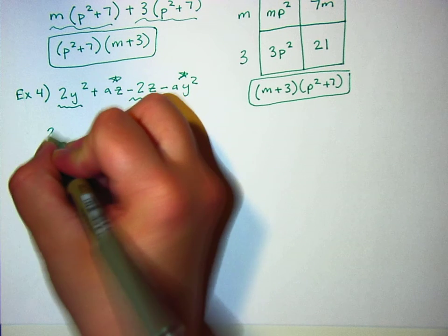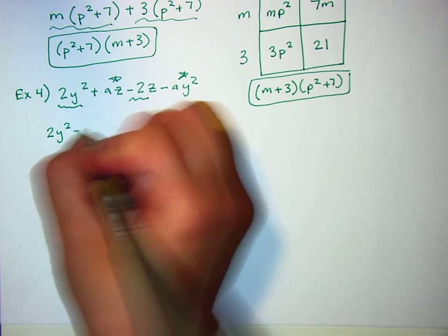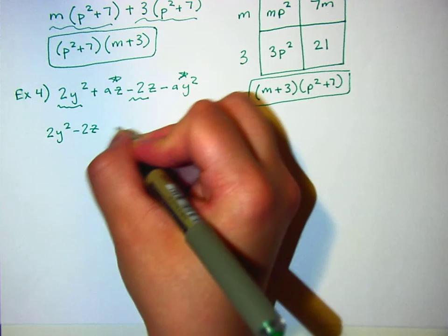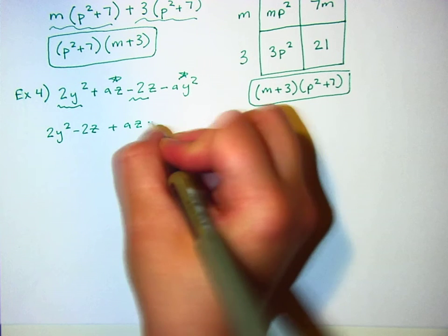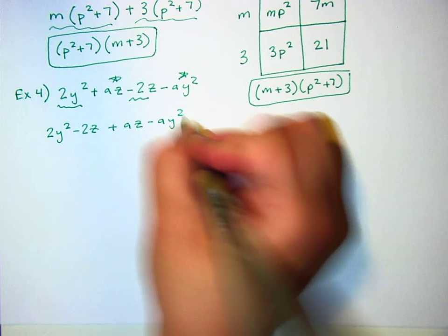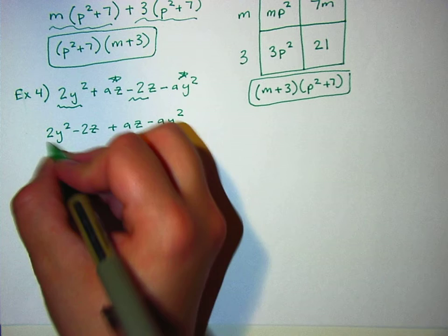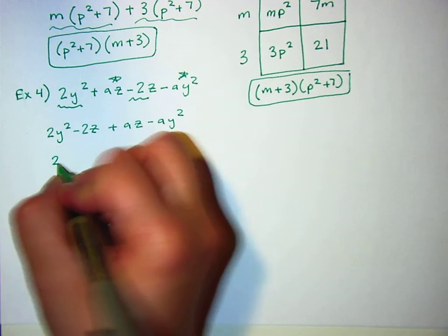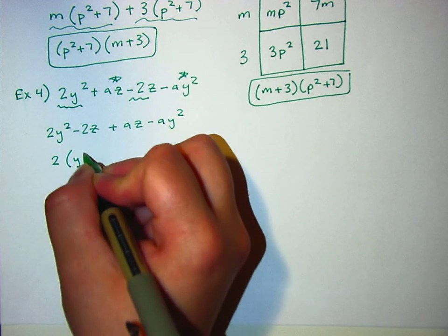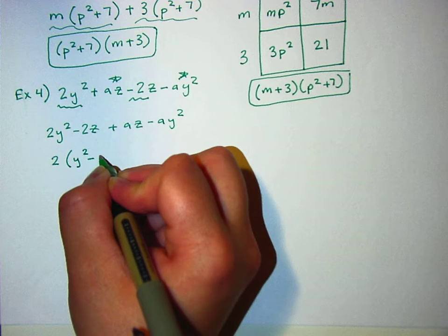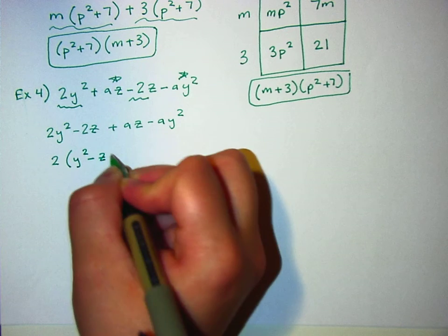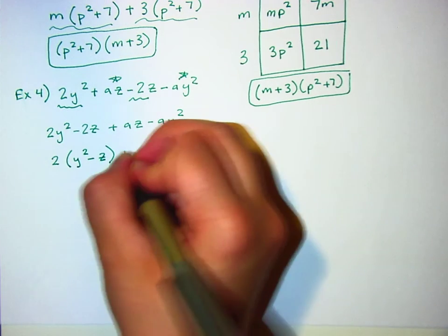So I'm going to put these together: 2y squared minus 2z and az and negative ay squared. Okay, so what can I take out of the first two? I can take out a 2, and I'm left with y squared minus z.